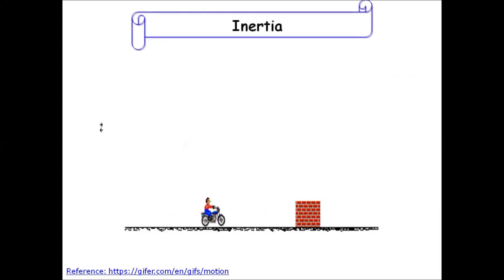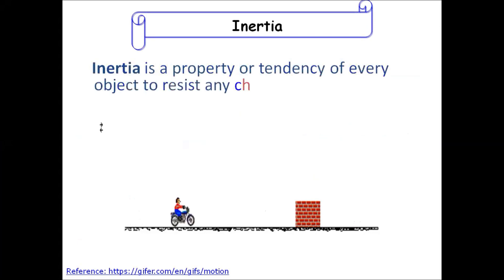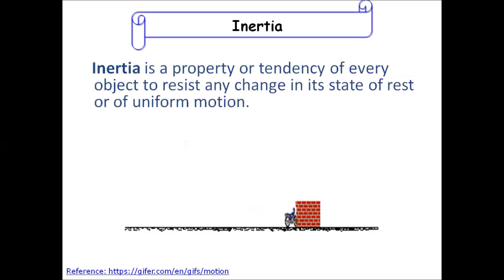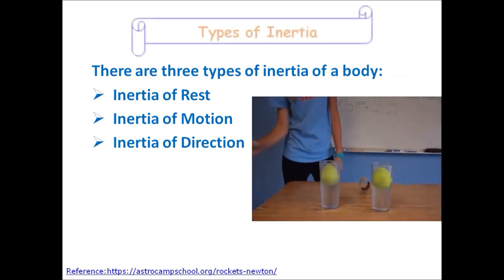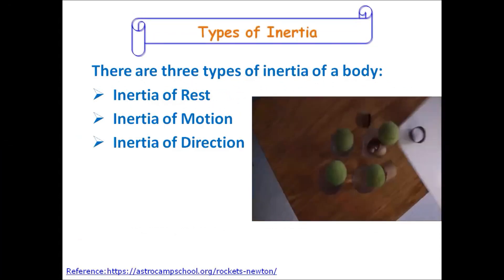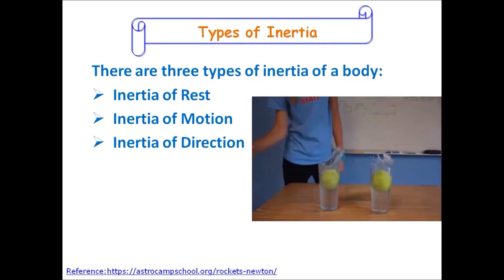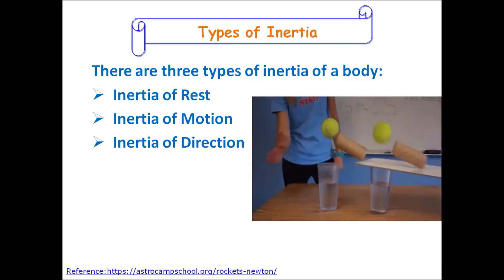Next, we have inertia. Inertia is a property or tendency of every object to resist any change in its state of rest or of uniform motion. These are of three types: inertia of rest, inertia of motion, and inertia of direction. Let us study all these inertias in detail.